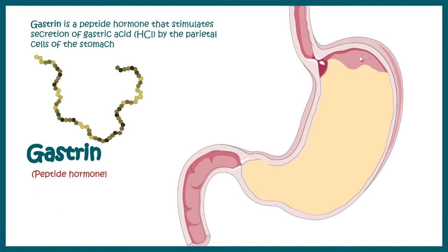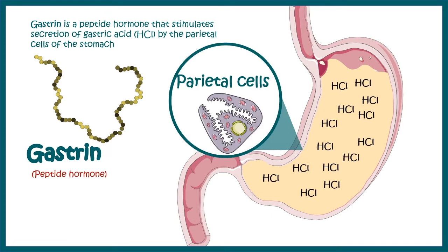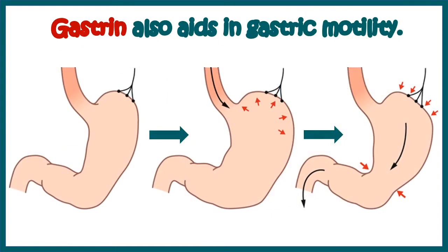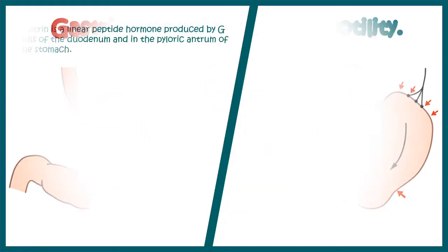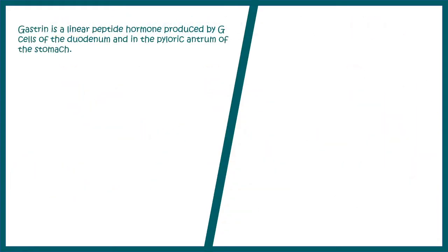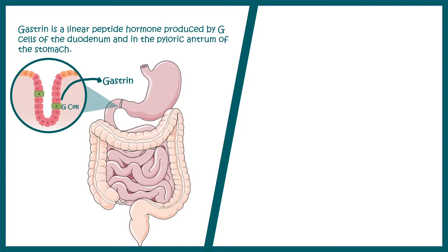Gastrin is a peptide hormone and its major function is gastric HCL secretion from the parietal cell. Gastrin also aids in gastric motility and contraction of the stomach, thereby helping to mobilize food particles and partially digested food particles from the stomach to the intestine. Gastrin is produced by G cells of the duodenum and in the pyloric antrum of the stomach.